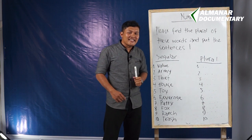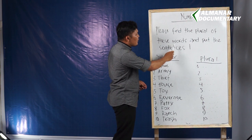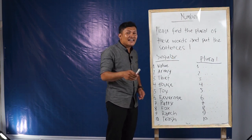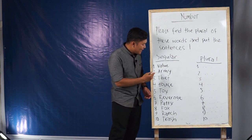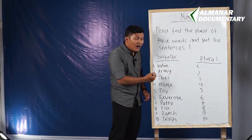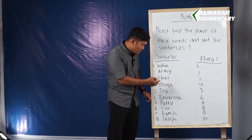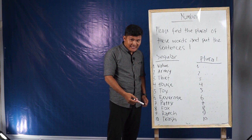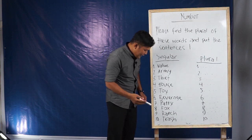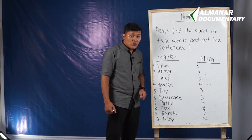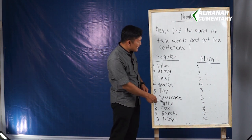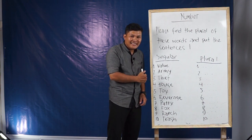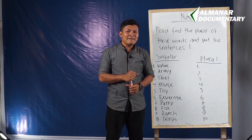Berikutnya, soal latihan: please find the plural of these words and put them in sentences — temukan kata plural dari kata-kata singular berikut dan buat kalimat. Kata-katanya: (1) value, (2) army, (3) thief, (4) house, (5) toy, (6) beverage, (7) patty, (8) fox, (9) ranch, (10) trash.